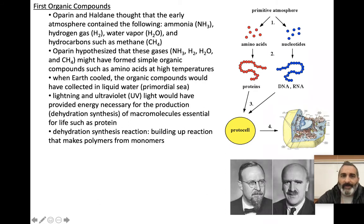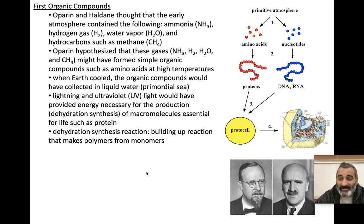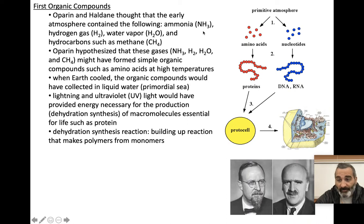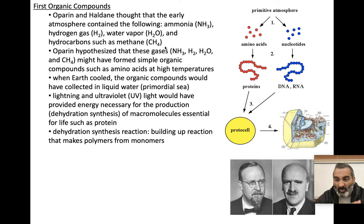Oparin and Haldane came up with a hypothesis. They said early Earth was not a habitable place for humans — it was toxic, it was poisonous. There wasn't any oxygen on early Earth because photosynthesis, which is how oxygen is made, hadn't evolved yet. Earth's early atmosphere had ammonia, hydrogen gas, water, and hydrocarbons such as methane. Probably carbon dioxide and carbon monoxide too, but not necessarily in Earth's very early atmosphere. We're going to go with those four: ammonia, hydrogen, water, and methane.